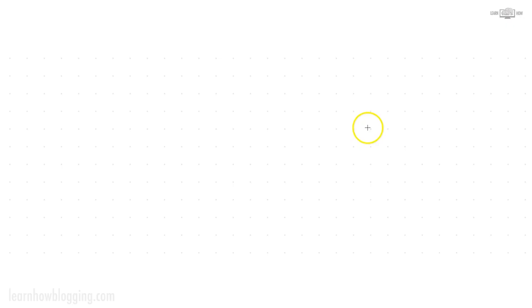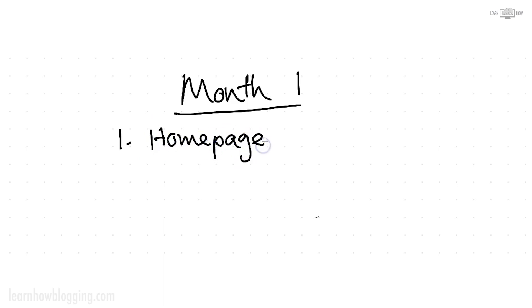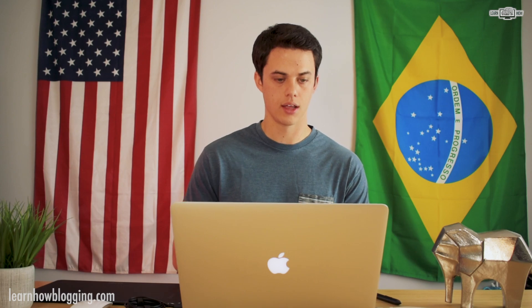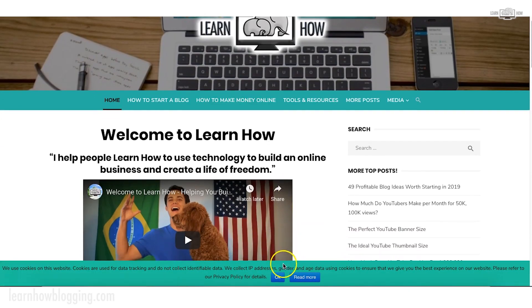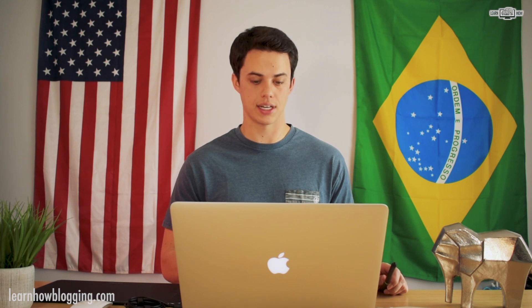After you purchase your domain name and hosting, you'll need to install WordPress. We talk about how to install WordPress through SiteGround and how to get started designing your homepage. Your homepage is where people land when they come to your domain. Looking at my blog here, this page you land on is the home page. Designing it is going to be one of the first things you do once WordPress is installed — probably in week one.